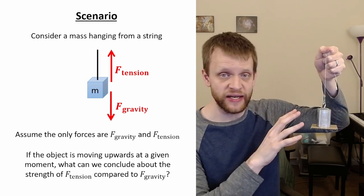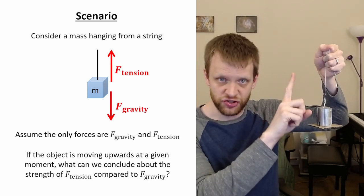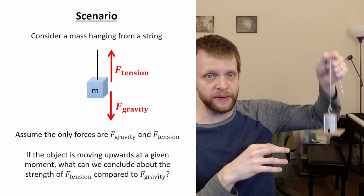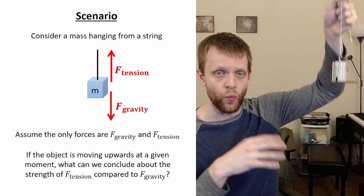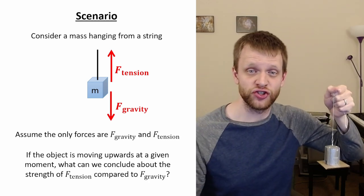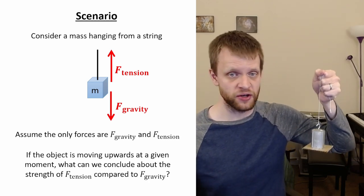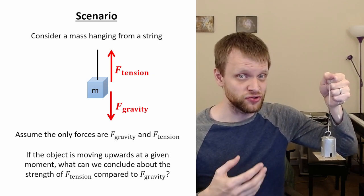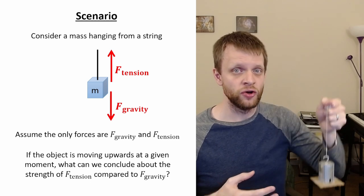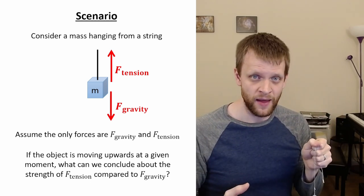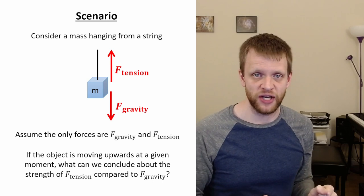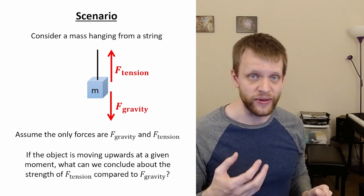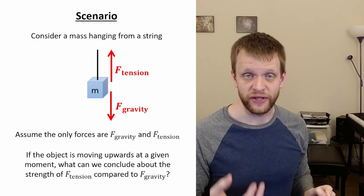All we're saying is we've got this object with just tension pulling up and gravity pulling down, and all we know is that the object is moving up in some way. What can we say about how the strengths of these two forces compare with each other? If you have a definite answer, you are wrong. This is related to a common misconception about how forces and motion are related to each other, which we can start to solve by looking at Newton's laws.